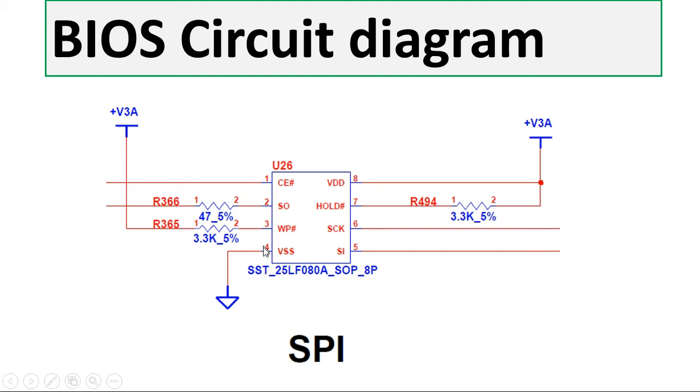Here we have the VSS, means the ground. As you can see, always the pin number four for every eight pin BIOS is connected to the ground. And of course, here we have other pins for the clock, for the hold. And here we have the VDD. The pin number eight is connected to VDD. Of course, the VDD equals always three point three volts in every motherboard.